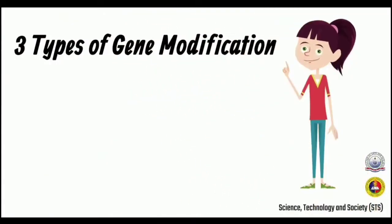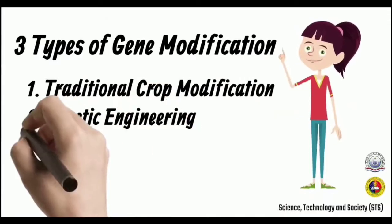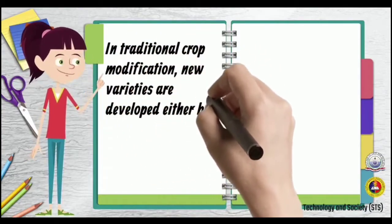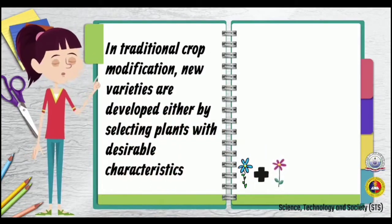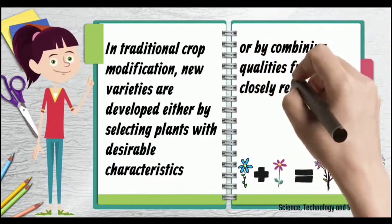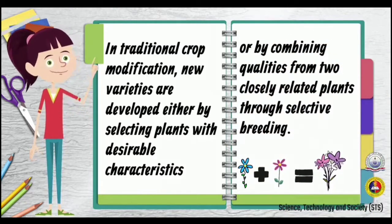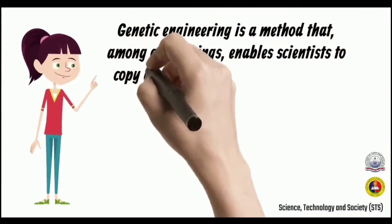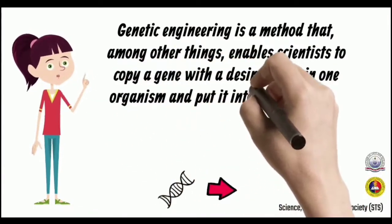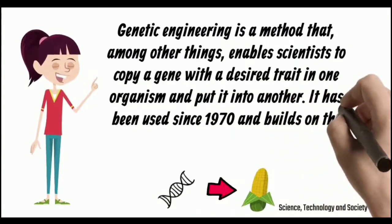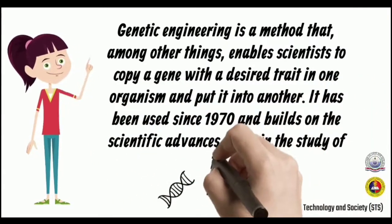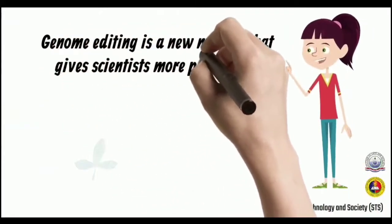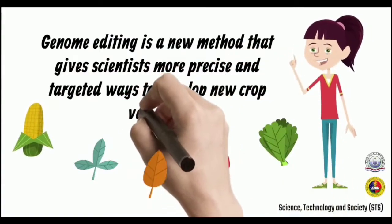There are three types of gene modification: traditional crop modification, genetic engineering, and genome editing. In traditional crop modification, new varieties are developed either by selecting plants with desirable characteristics or by combining qualities from two closely related plants through selective breeding. Genetic engineering enables scientists to copy a gene with the desired trait in one organism and put it into another; it has been used since 1970 and builds on advances in the study of DNA. Lastly, genome editing is a newer, more precise and targeted method to develop new crop varieties.